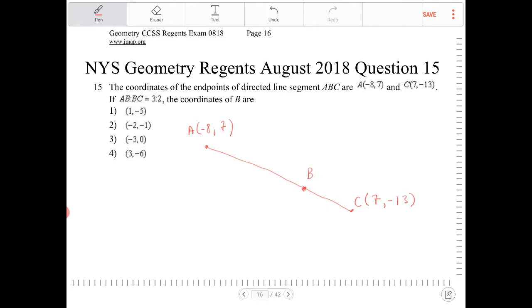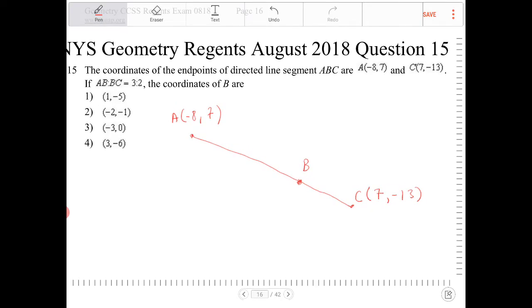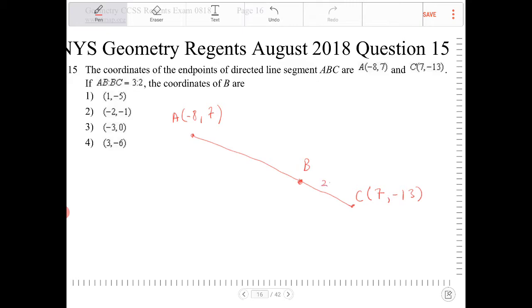I don't know where point B is supposed to be, but I do know that the line segment, if I call BC 2n, the segment, the length of the segment BC,